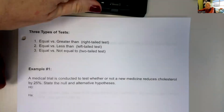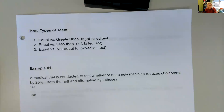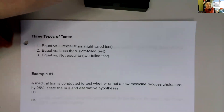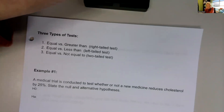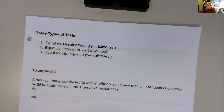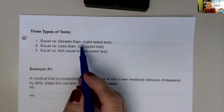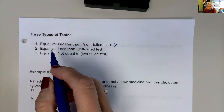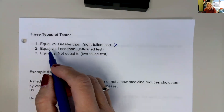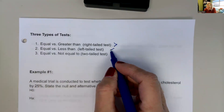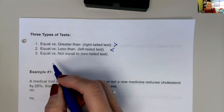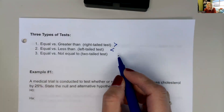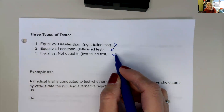Besides the parameters we're going to test, there are three types of tests we can do. We could have equal versus greater than — that would be a right-tailed test. We could have equal versus less than — that would be a left-tailed test. Or we could have equal versus not equal to — and that would be a two-tailed test.